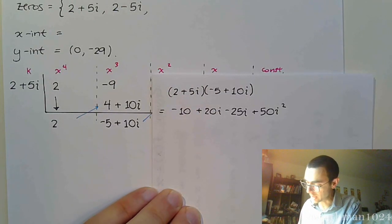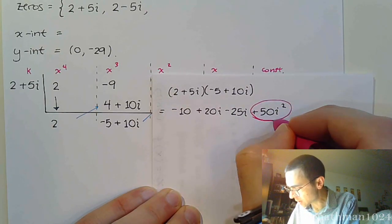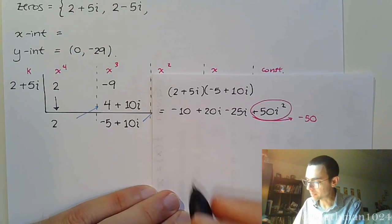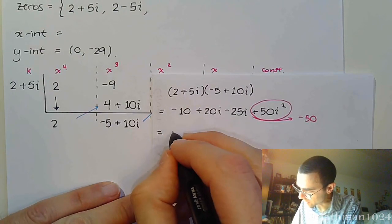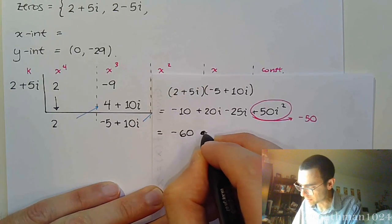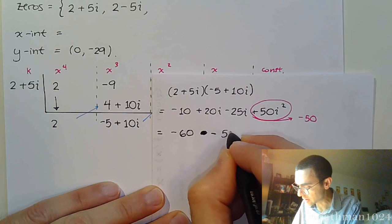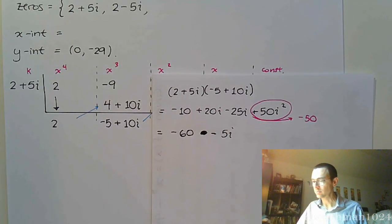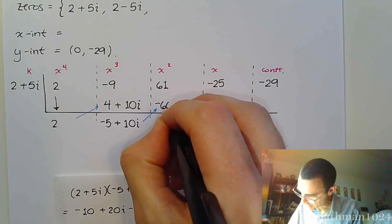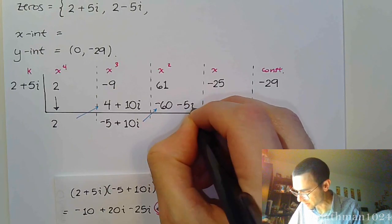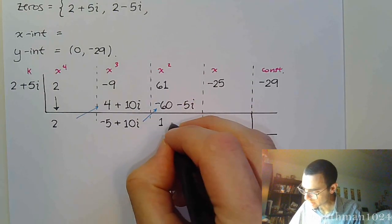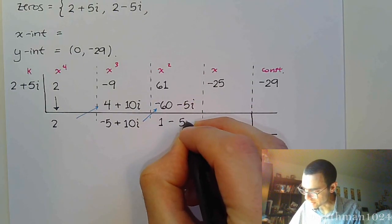And I'm just going to have to foil this. So, it gives me -10, on the outside is +20i. On the inside is -25i. On the outside is +50i^2. Well, as we've seen many times in the past, this +50i^2 becomes -50 when you change the sign. And so, now we have -60 plus... Oh, excuse me. That's not plus. Now, that's minus 5i. Alright, so let's put that into play here. So, that's -60 minus 5i.